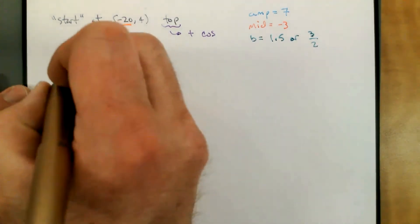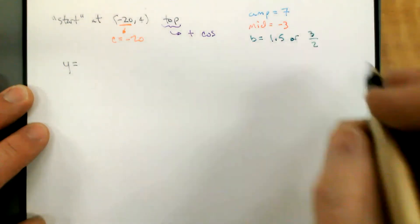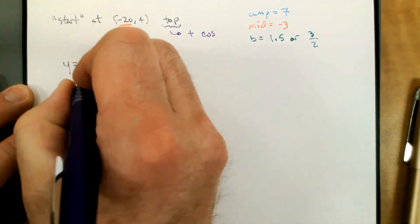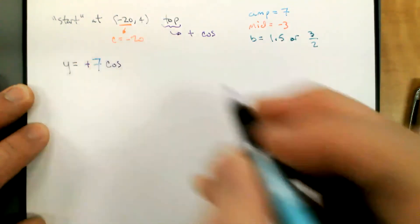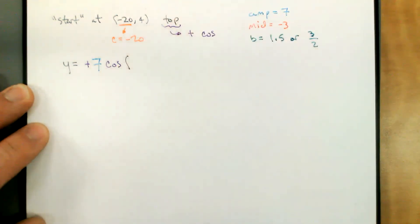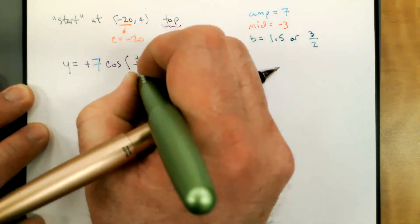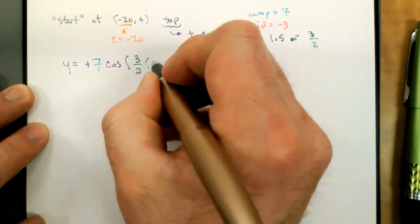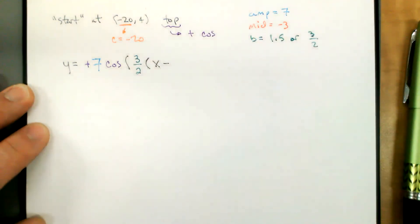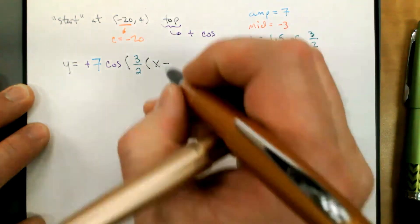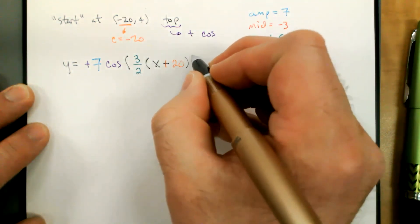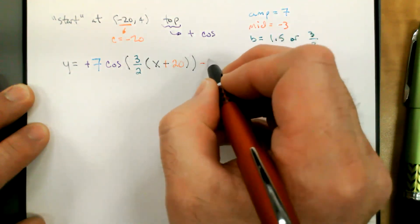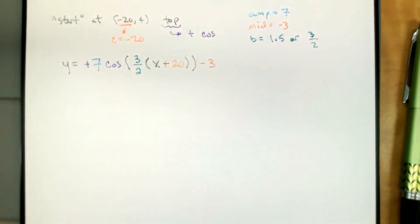Now we're ready to write an equation. We can write y equals, I'm using a positive cosine. And the coefficient is going to be seven, because our amplitude is seven. Coefficient of x is three halves. In the parentheses is going to be x minus C, and C is negative 20. So it'll get written down as x plus 20, and then minus three for the middle.